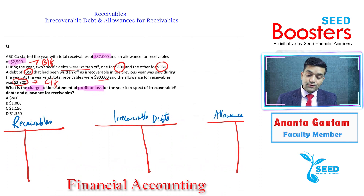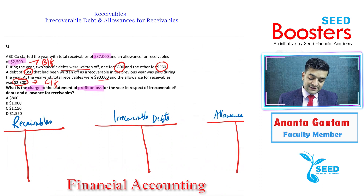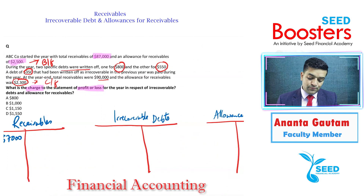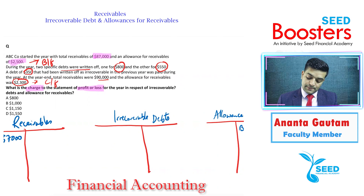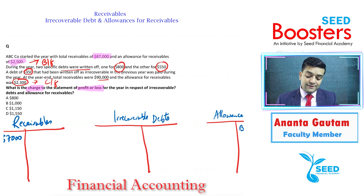Let's put them in the T-accounts. ABC company started the year with total receivables of 87,000. So 87,000 is the brought-forward receivables on the debit side. And the brought-forward allowance for receivables of 2,500 is on the credit side.